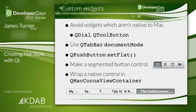Another option is QMacCocoaViewContainer — the really powerful option. This lets you wrap a real Mac control in a Qt widget. For example, NSSegmentedControl from Safari could be wrapped in this container. You need to intercept Cocoa events, generate signals from them, and handle some sizing issues — it's non-trivial work. But then you're not faking a Mac widget; you're just asking Cocoa to draw the widget for you. Again, you have to decide what to do on Linux and Windows.